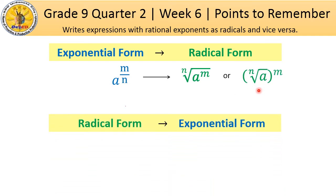Ngayon naman, baligtarin natin. From radical form to exponential form. Base a raised to m over n, where m is the exponent in radicand. And denominator n is the index of the radical.